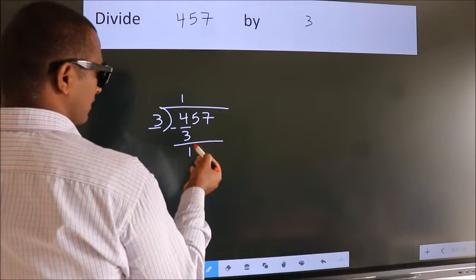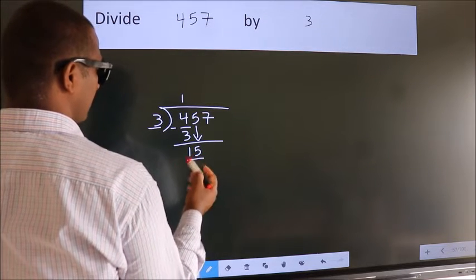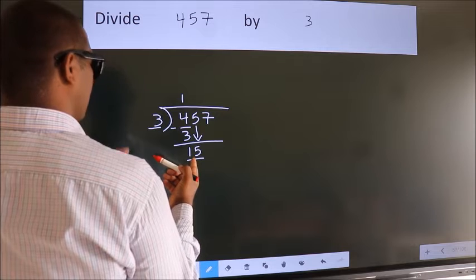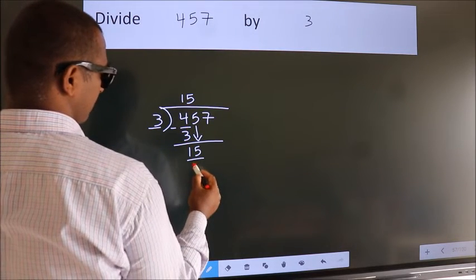After this, bring down the beside number. So, 5 down. So, 15. When do we get 15? In 3 table. 3 5s, 15.